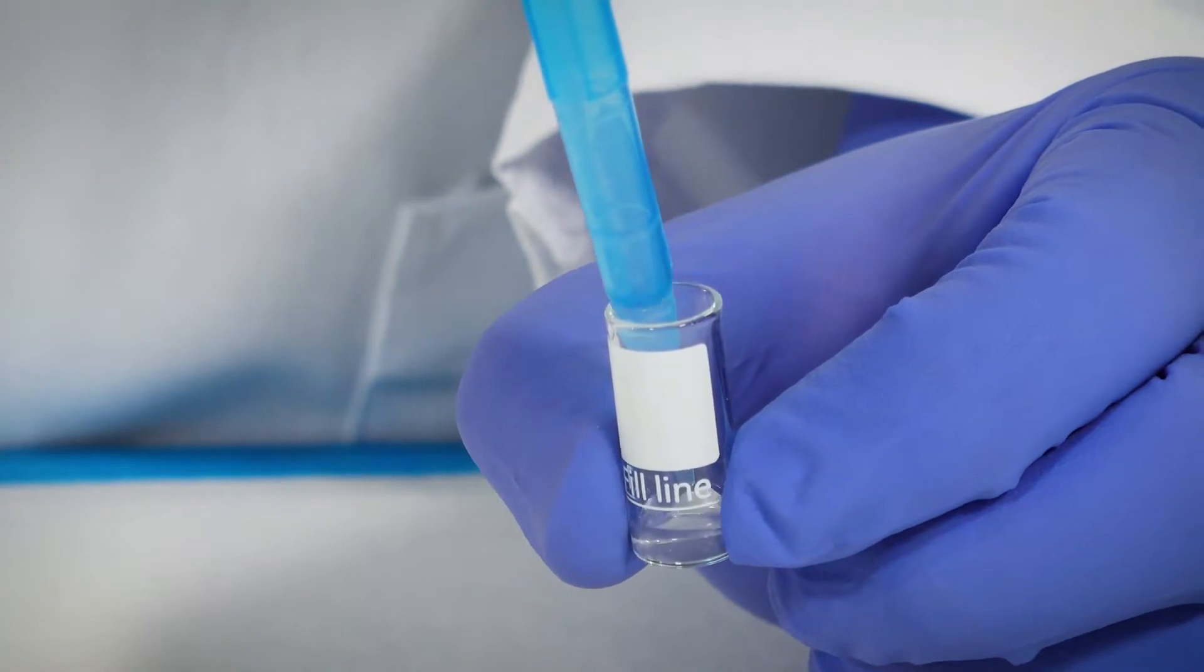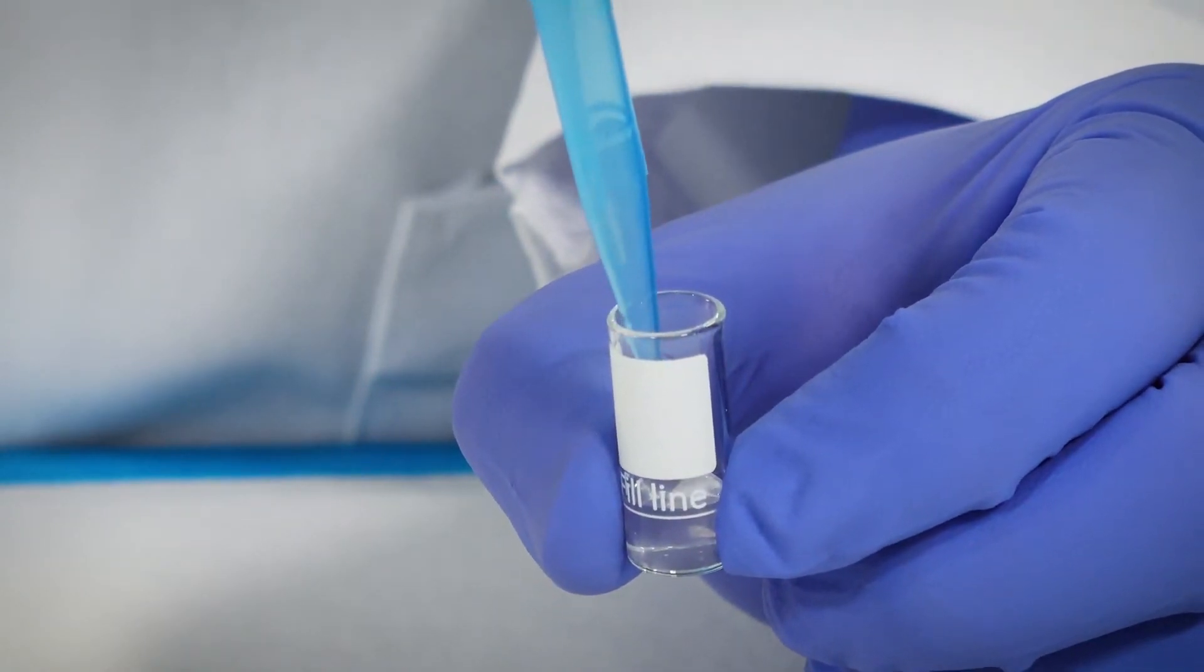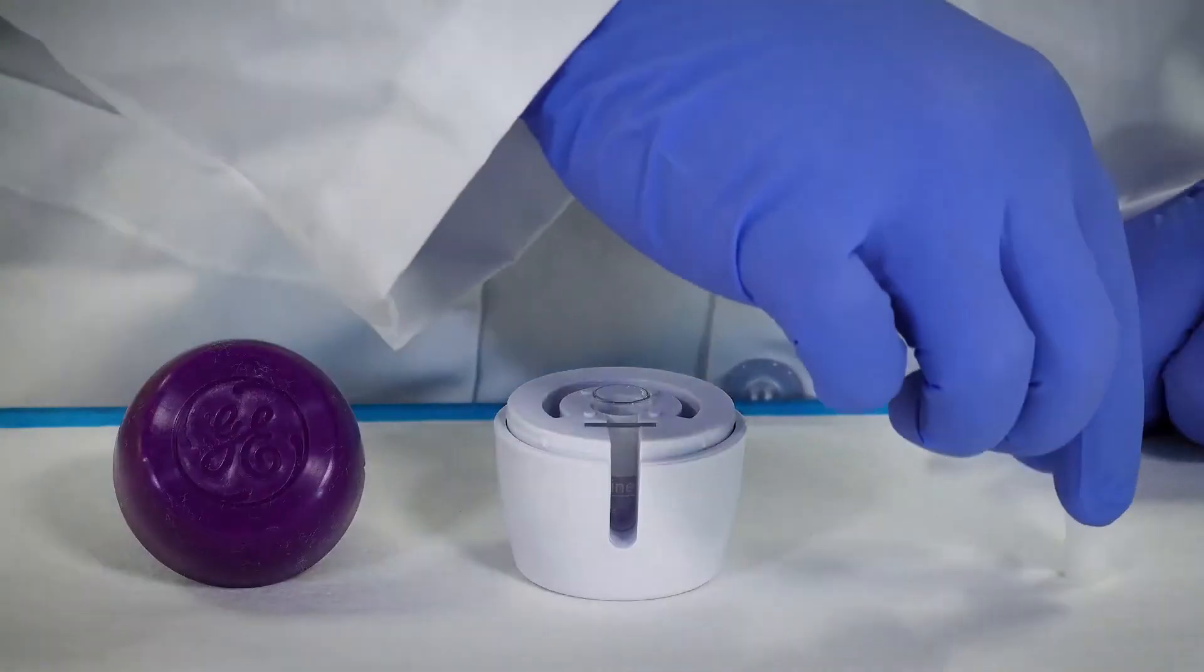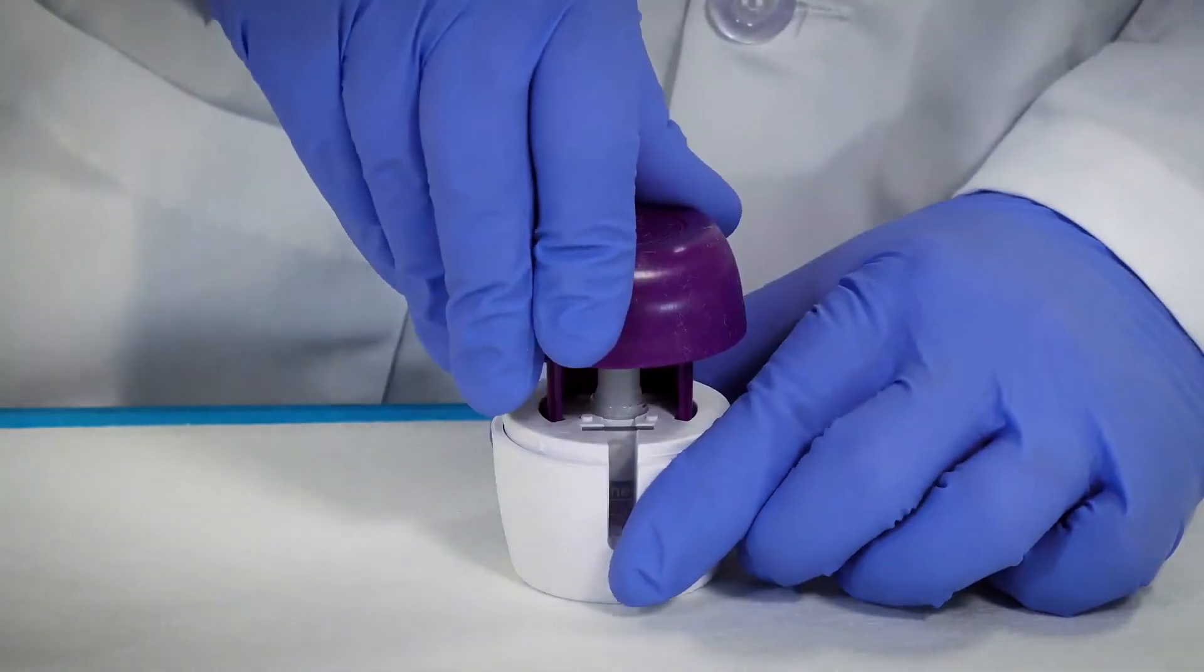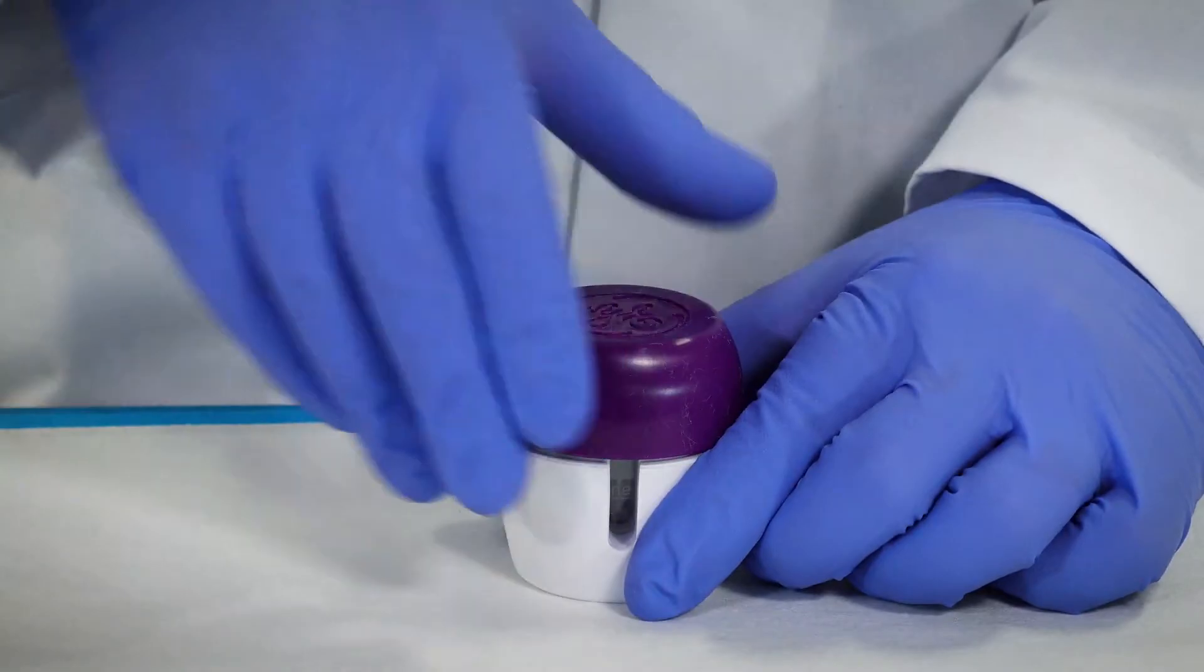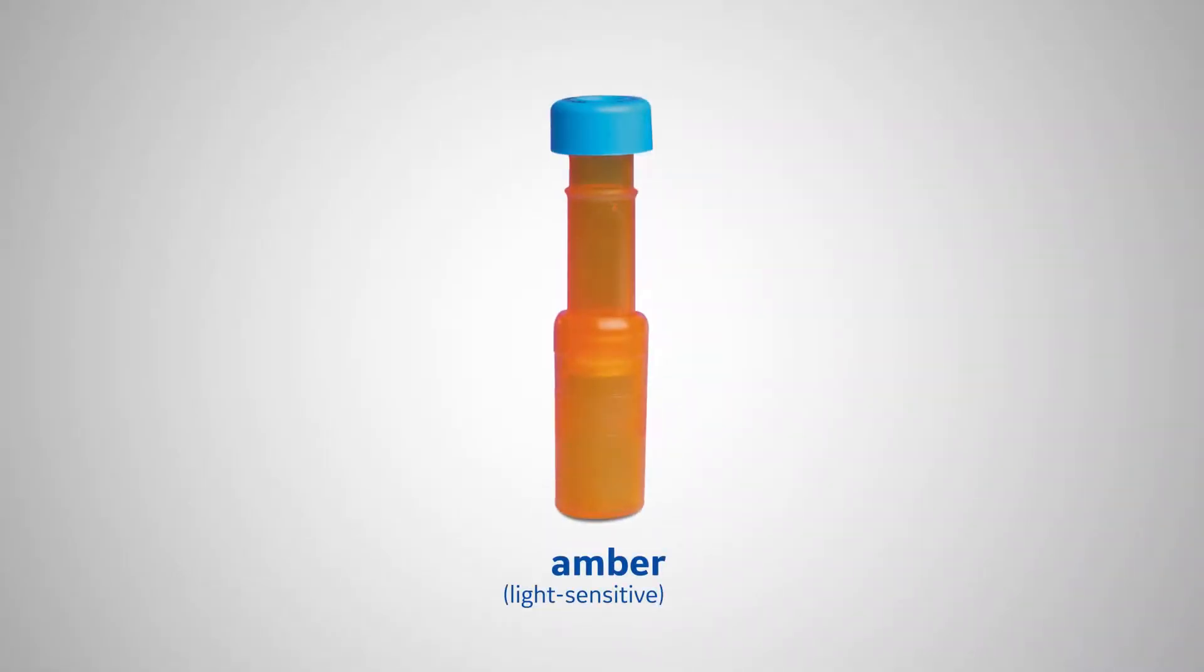To avoid plastic-based leachables, use the glass version of the Mini Uniprep. An ergonomic compressor unit is available to speed sample prep three times faster. Use the amber version for light-sensitive samples.